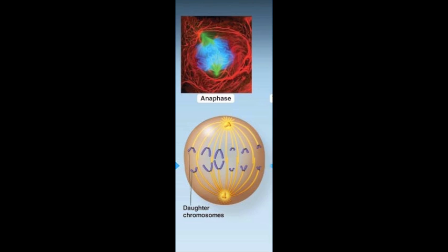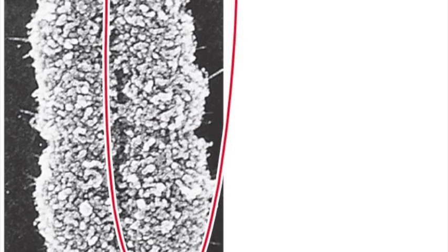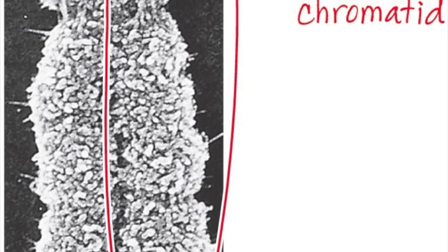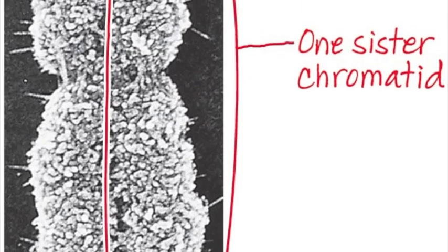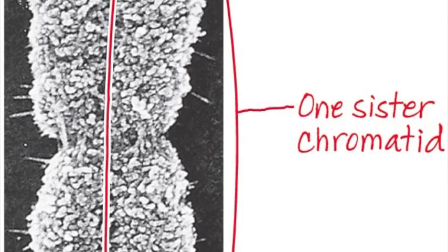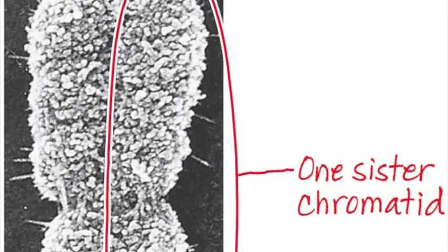Anaphase begins when the centromeres and cohesins of each chromosome separate. Each sister chromatid is now considered an individual chromosome. Therefore there are twice as many chromosomes as there were during metaphase. The daughter chromosomes now move towards the different poles as the kinetochore microtubules shorten. This is the shortest phase of mitosis.